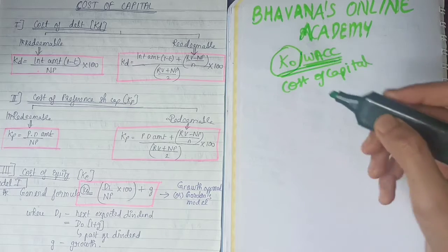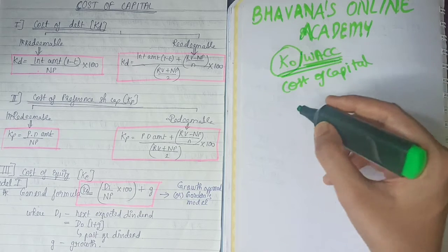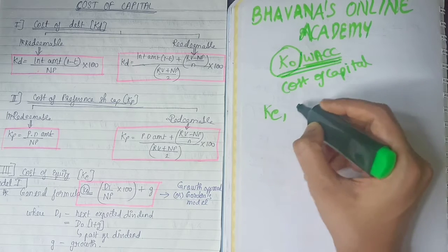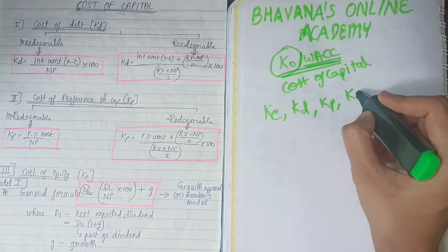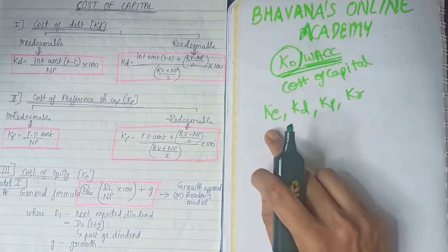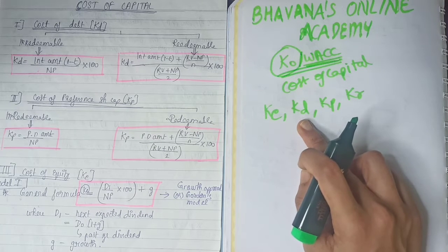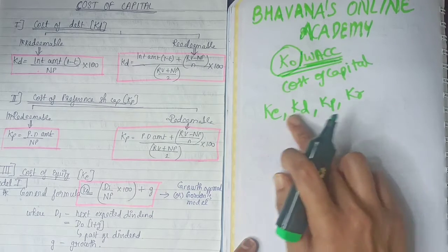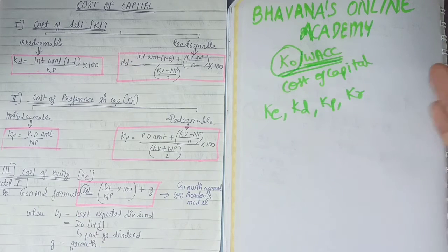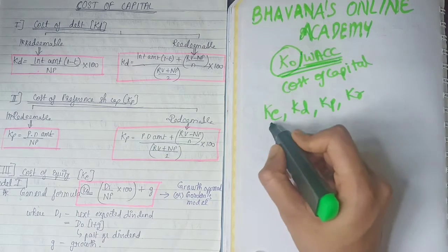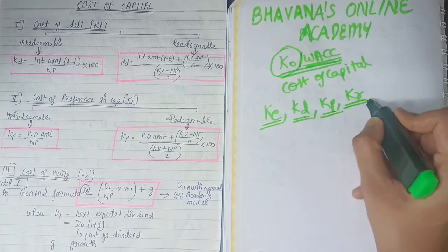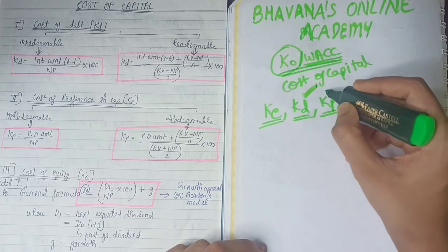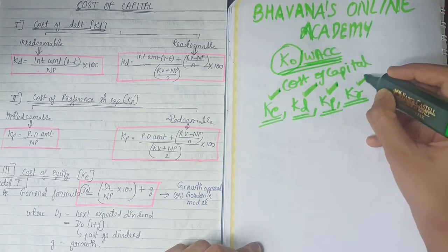For finding KO or the weighted average cost of capital, you will need to know how to find KE, KD, KP, and KR. KE is cost of equity, KD is cost of debt, KP is cost of preference share, and KR is cost of retained earnings. If you do the weighted average of all these, you will get your weighted average cost of capital.